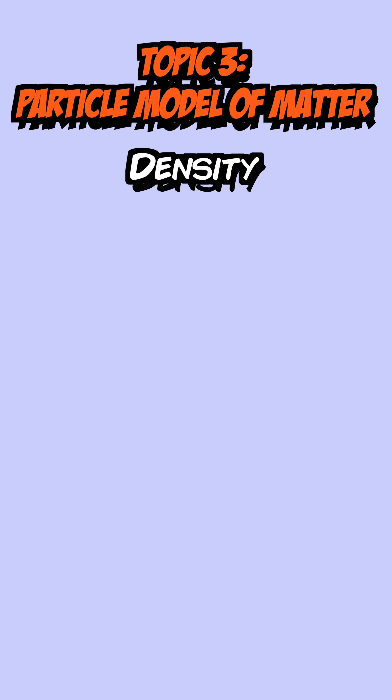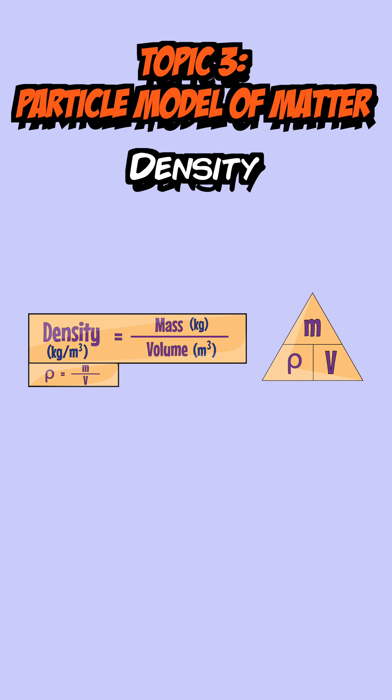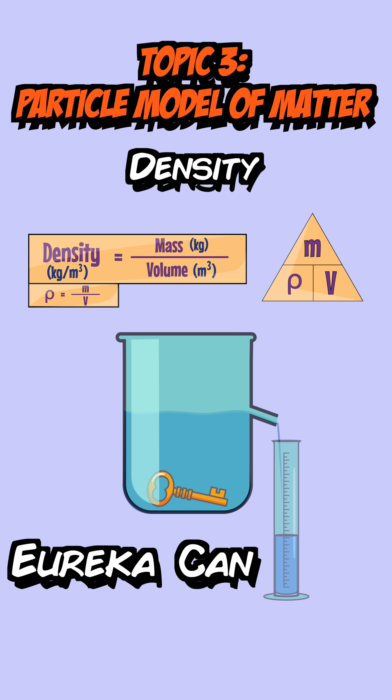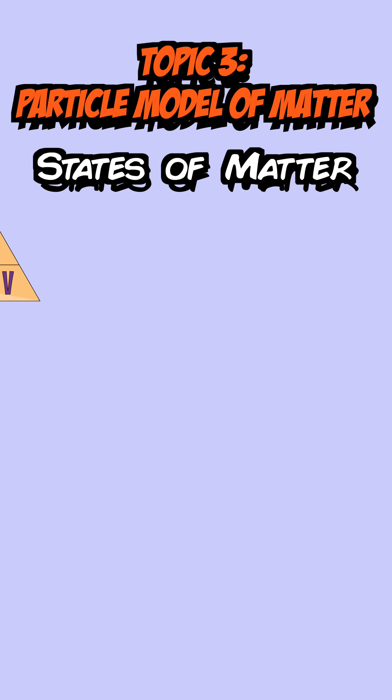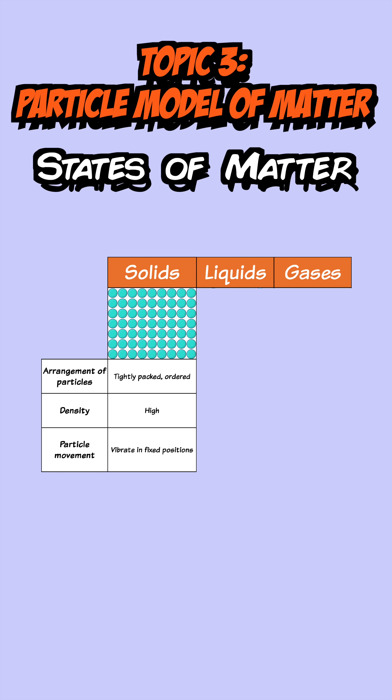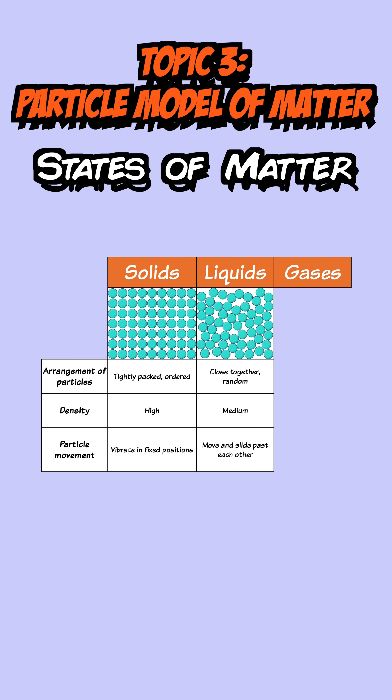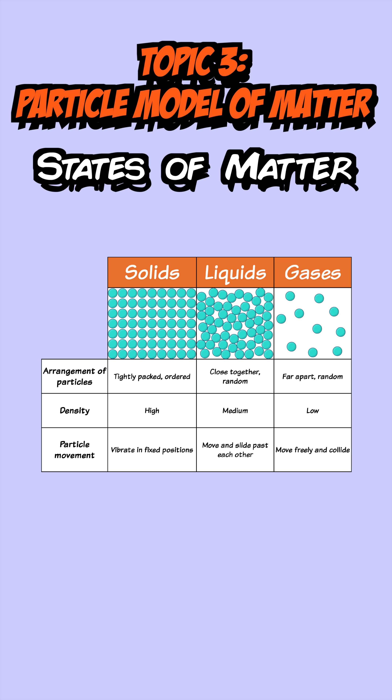The third topic starts with density, where the equation is mass over volume. You can find the volume of an object by using a Eureka can and measuring the water displaced by it, then divide mass by that volume to find the density. You also need to know how density changes in solids, liquids and gases and how the particles are arranged in each one. Solids have closely packed particles with a regular structure, liquids also have close particles but the structure is irregular, and gases are particles which are far apart and move quickly in random directions.